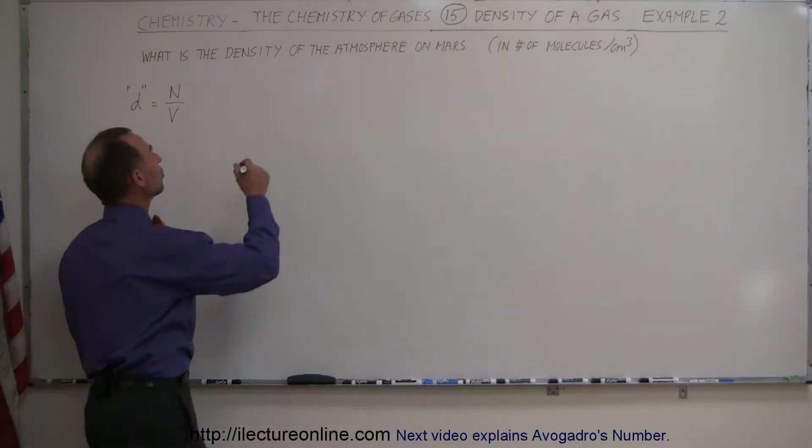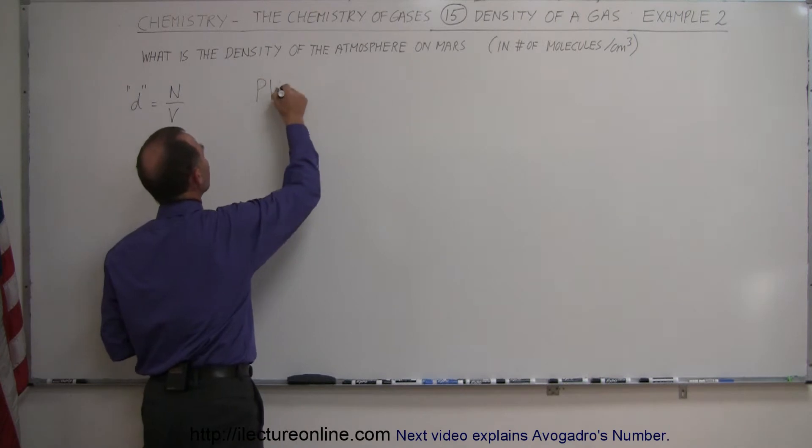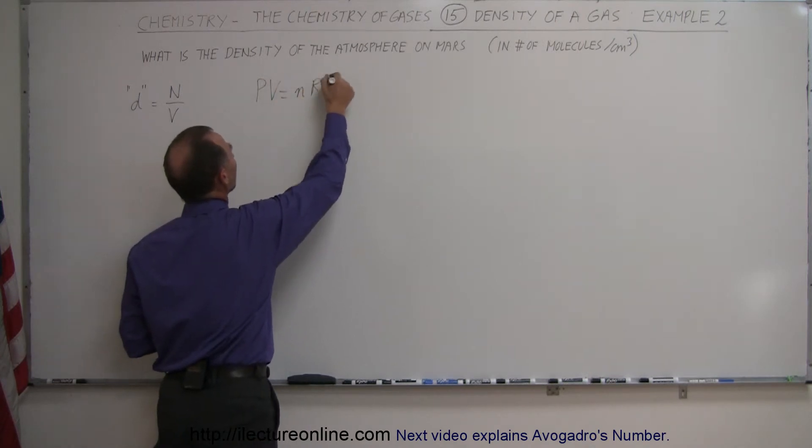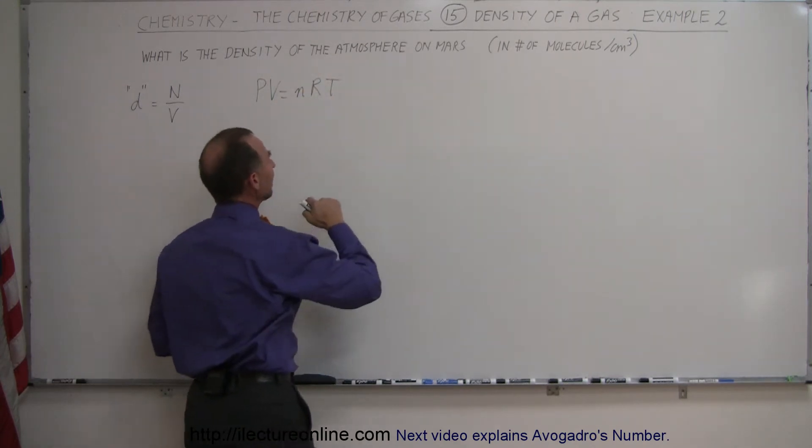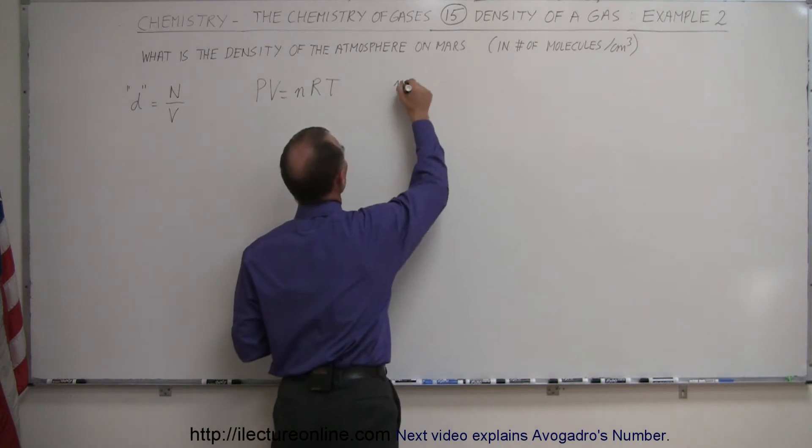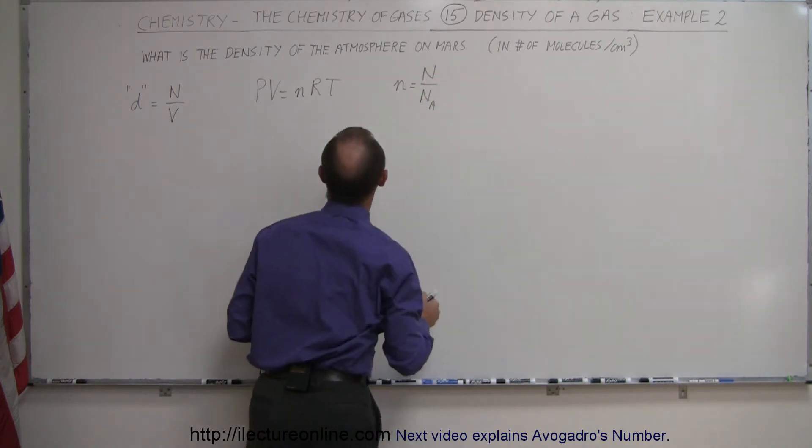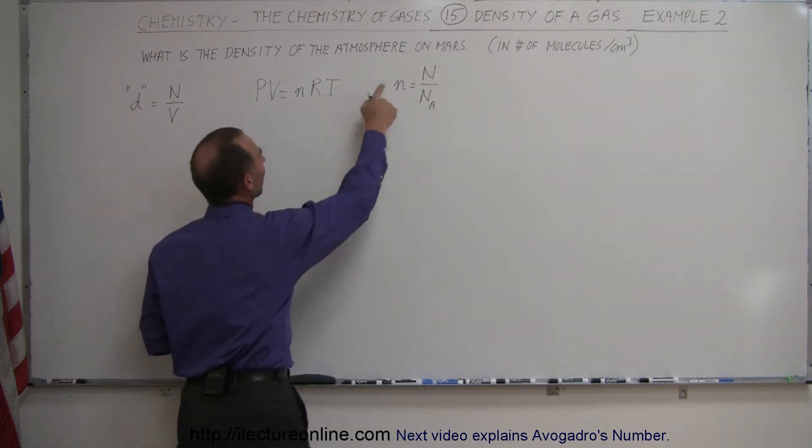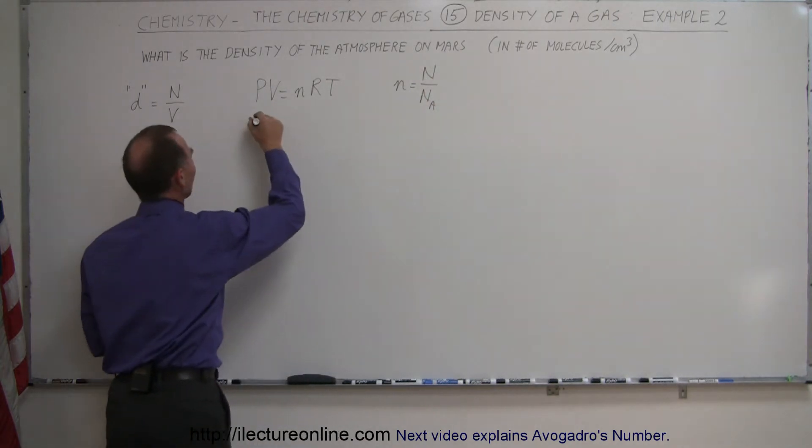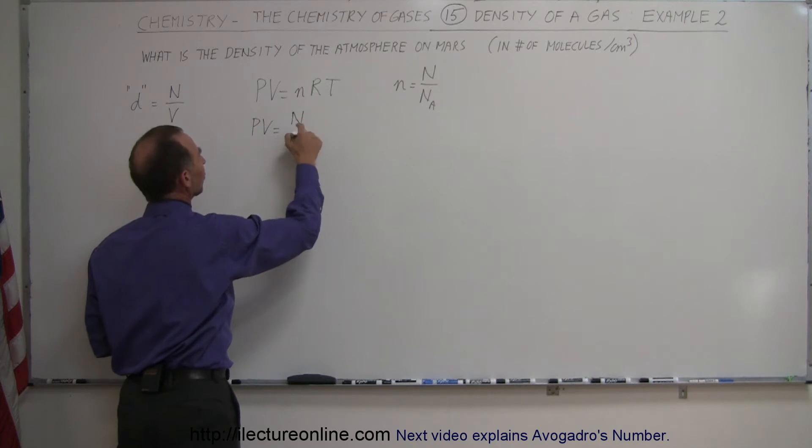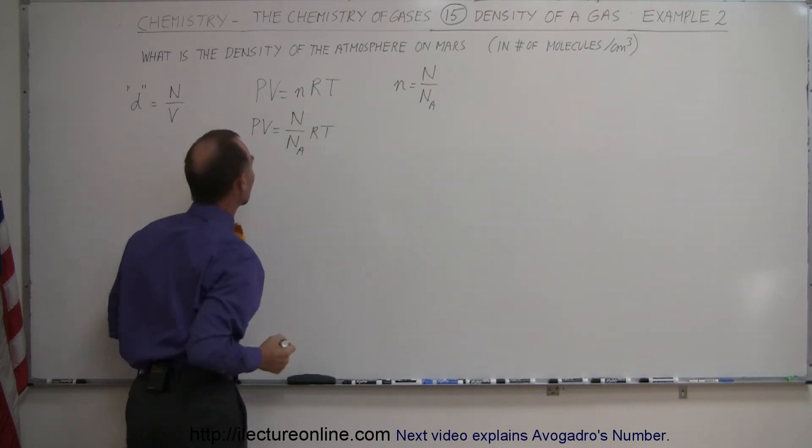We will need to use the PV equals nRT equation, the ideal gas equation, and the definition that the number of moles is equal to the ratio of the number of molecules in the gas divided by Avogadro's number. So we need to replace this n by this quantity. So we have PV equals the number of molecules divided by Avogadro's number times the gas constant times the temperature.